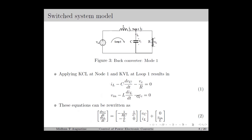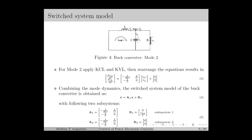These two equations can be rewritten compactly as equation number 2. Taking terms to the right hand side and dividing by C gives dVC/dt equal to minus 1/(RC)·VC plus 1/C·IL. Similarly, dIL/dt equal to minus 1/L·VC plus VIN/L. For mode 2, we have the equivalent circuit as in figure 4. By applying KCL and KVL and re-arranging, the result is equation number 3. The only difference compared to mode 1 is that the DC input voltage does not appear, making that term 0.